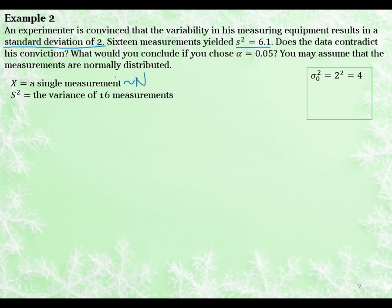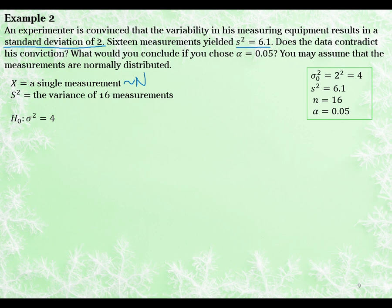Summarizing the data: the hypothesized standard deviation is 2, which means the hypothesized variance is 4. Our sample variance is 6.1, sample size is 16, and alpha is 0.05. Our null is that the variance equals 4 — converting from the standard deviation of 2 to 4, and we work with 4 from now on. The question asks if the data contradicts the conviction without indicating a direction, so we just want to know if it's different, which means it's a two-sided, not-equal test.